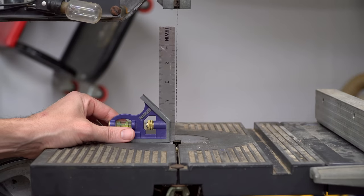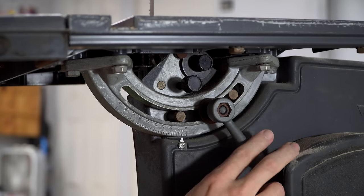If your blade isn't square with the table, adjust the table using this lever on the backside of the saw.